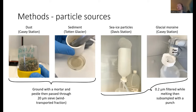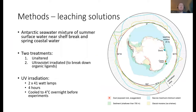There were two leaching solution treatments: unaltered seawater (referred to as NT, no treatment) and UV irradiation to break down organic ligands. UV irradiation was done in a custom-made UV digester with two 41-watt lamps. Samples were placed in clean FEP (UV-transmitting) bottles and irradiated for four hours, then cooled to 4°C overnight immediately before experiments. Voltammetry results showed UV treatment reduced uncomplexed ligands available to bind iron by about 20%.